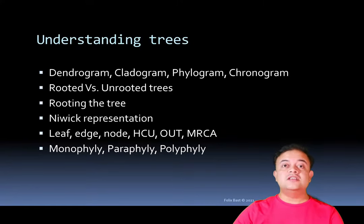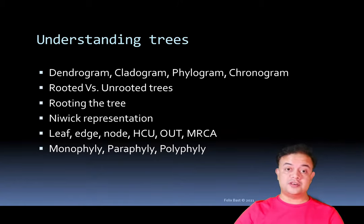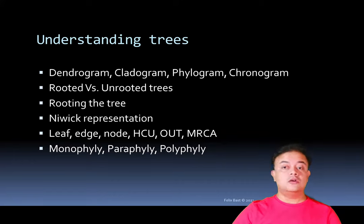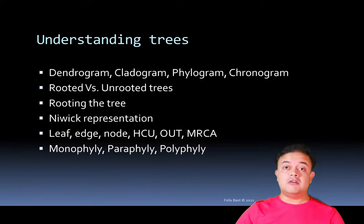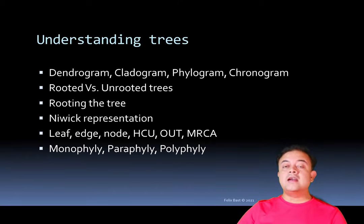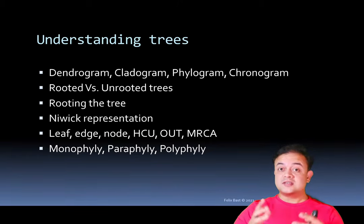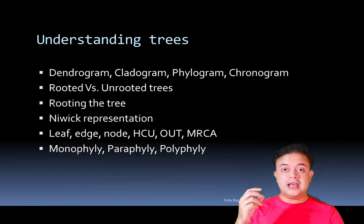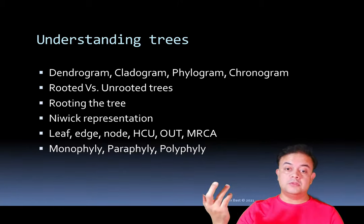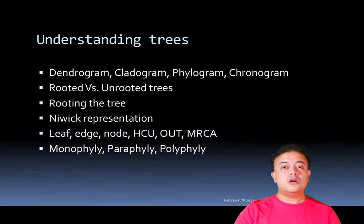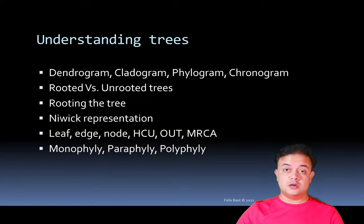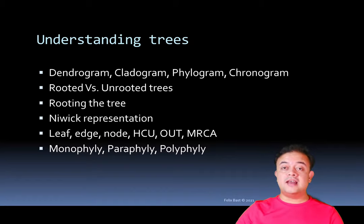In this brief video we will see more about phylogenetic trees and the types of trees like dendrogram, phylogram, cladogram, and time tree. We'll cover what rooting the tree means, the various forms of rooted versus unrooted trees, the Newick representation, and various tree-related terms like leaf, edge, node, hypothetical taxonomic unit, operational taxonomic unit, and also monophyly, paraphyly, and polyphyly.